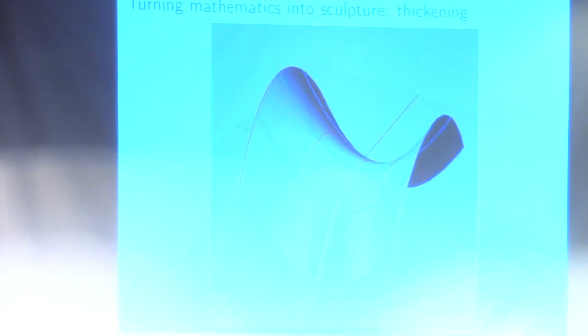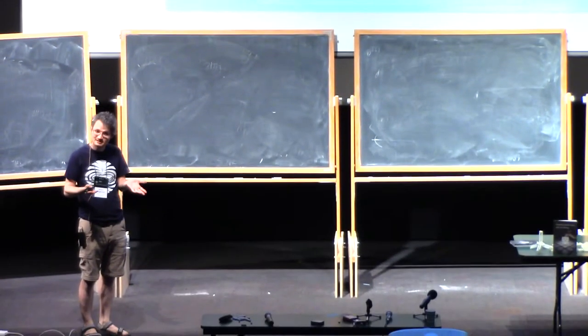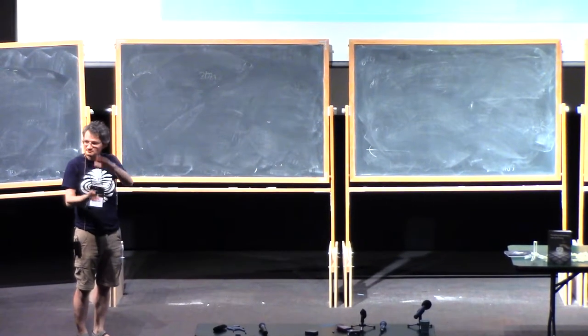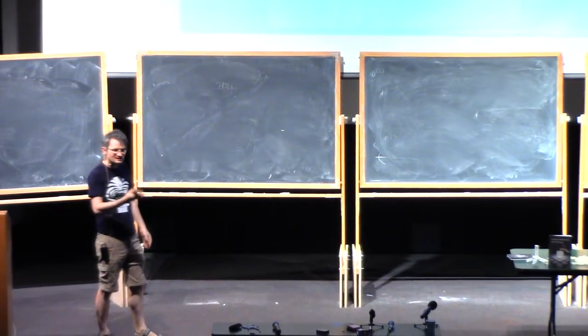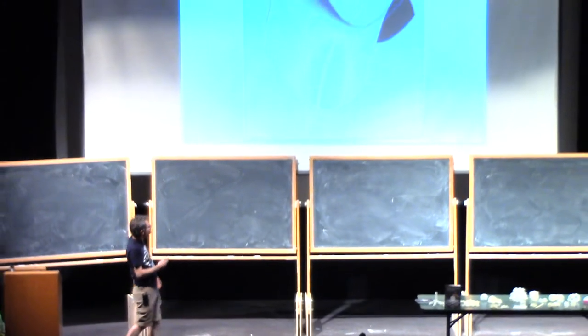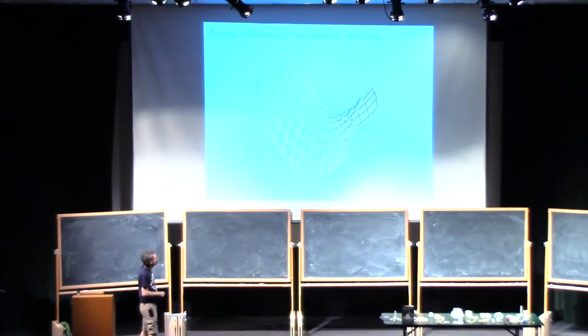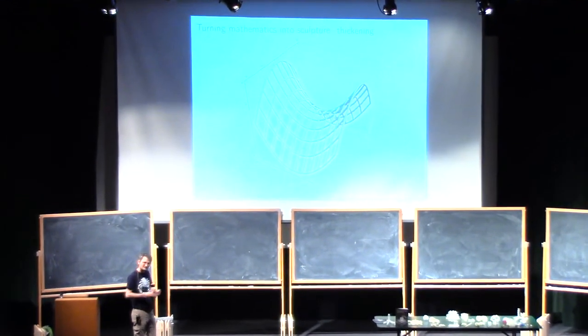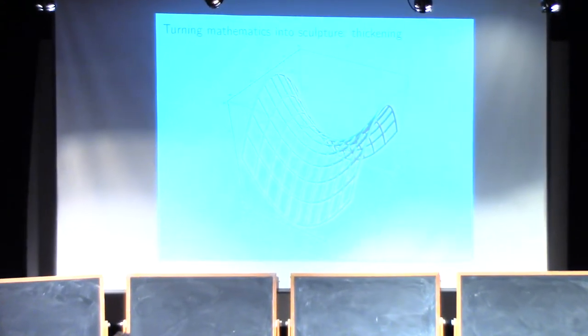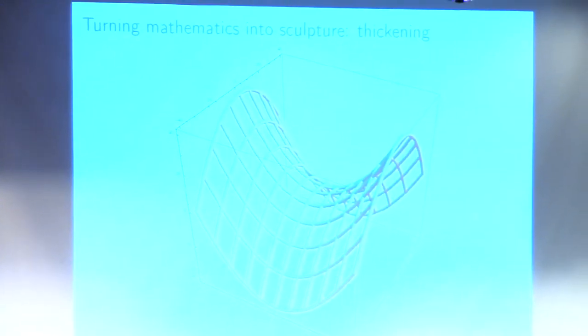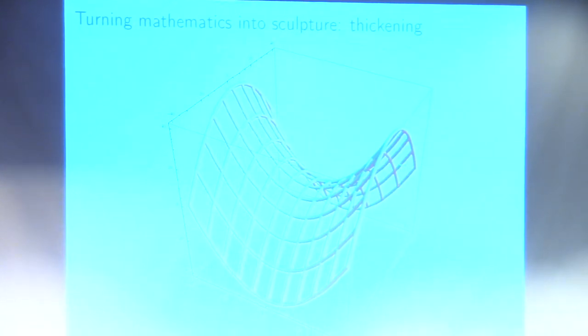Moving from one-dimensional objects to two-dimensional objects, here's a hyperbolic paraboloid. You might think you should just thicken it in exactly the same way — moving in the normal direction to make a thickened surface. I actually prefer to put holes in it instead. There are maybe three reasons for this: first, it's cheaper — you're using less material and it'll print quicker; second, it lets you see through, there's a sort of transparency; and third, it lets you show something about the surface.